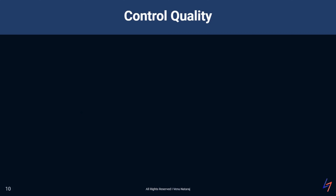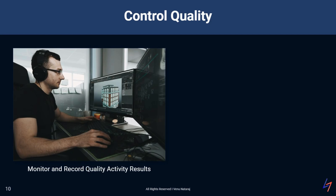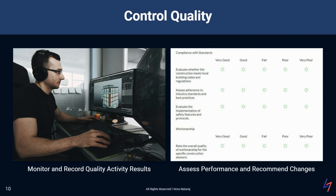The final process in quality management is control quality — our checkpoint system. First, we monitor and record the results of our quality activities by collecting data on our quality metrics and documenting outcomes of quality control checks. Second, we assess performance against our quality standards, comparing actual results to planned quality levels to identify any gaps or issues. Third, we recommend changes when necessary — if we find we are not meeting our quality objectives, we propose and implement corrective actions. Control quality is a critical process because it helps us catch and correct quality issues before they become major problems.